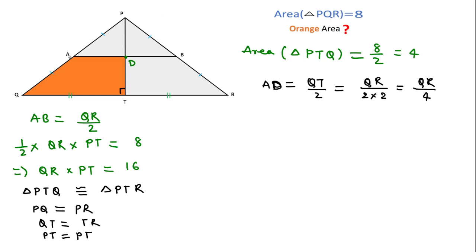Now we have to find area of this trapezium QADT, so I will first find area of this triangle, that is area of triangle PDA equal to 1/2 base into height, that is PD into AD over 2.